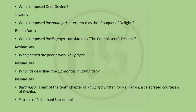During exams, till date there have not been questions on literary texts or patrons or rulers. But now since it is all MCQs, just play safe and read them once. Who composed Geet Govind? Jai Dev — one of the important themes that artists have made. Who composed Rasmanjari, interpreted as 'bouquet of delight'? Bhanudat. Who composed Rasik Priya, translated as 'the connoisseur's delight'? Keshavdas. Who penned the poetic work Kavi Priya? Keshavdas. Who described the 12 months in Baramasa? Again, Keshavdas. So the main texts by Keshavdas are Rasik Priya, Kavi Priya and Baramasa. Baramasa is a part of the 10th chapter of Kavi Priya, written for Rai Parbhan, celebrated courtesan of Orsha.